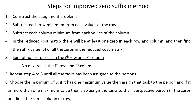The steps for the improved zero suffix method are: first, construct the matrix for the assignment problem and subtract each row minimum value from the corresponding row and column. In the reduced cost matrix, there will be at least one zero in each row and column. Then find the suffix value S of all the zeros in the reduced cost matrix. S is calculated by the sum of non-zero costs in the i-th row and j-th column divided by the number of zeros in the i-th row and j-th column. Repeat steps 4 to 5 until all tasks have been assigned.